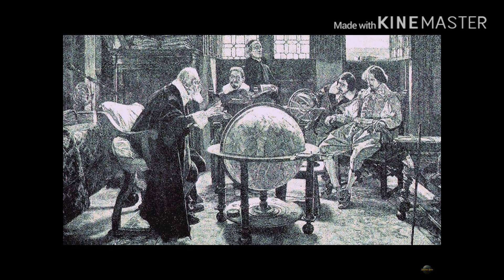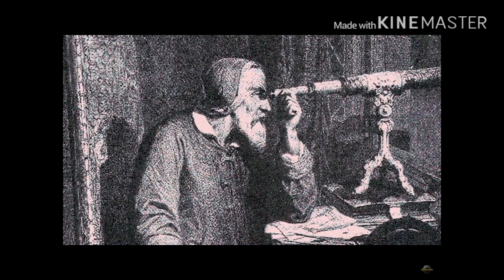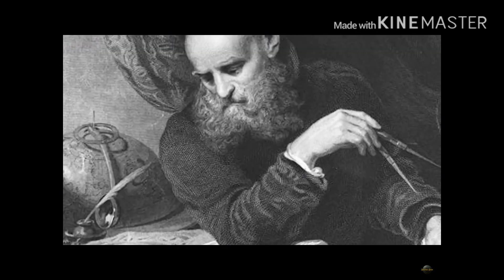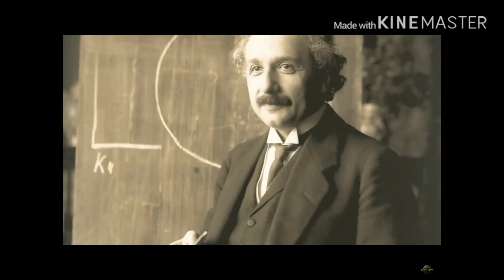The church came to know about his teachings and warned him of a death penalty. He was house arrested throughout his life and even he lost his eyes due to continuous observation of the stars. He was the most influential scientist in the sense of the great Albert Einstein.